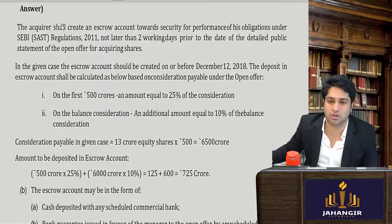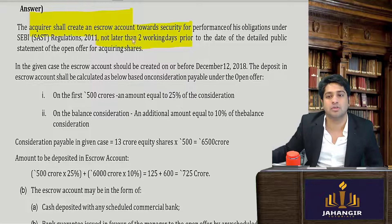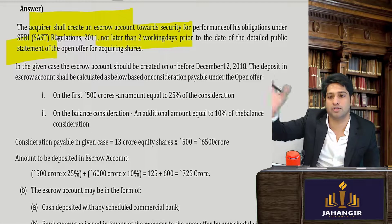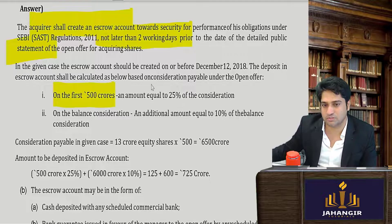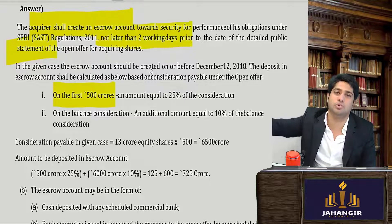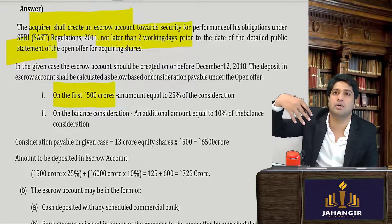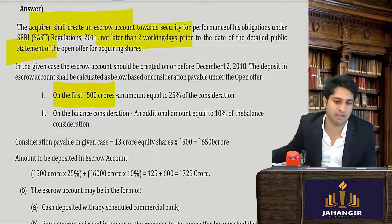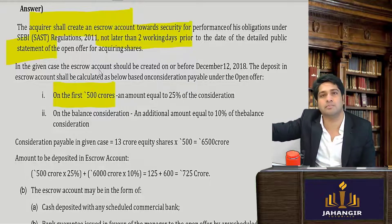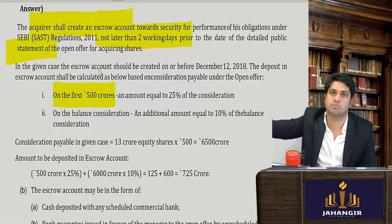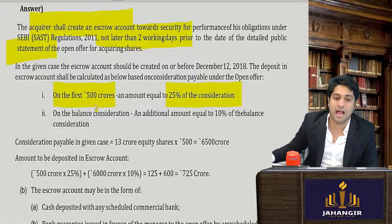Once you know the law, the sums are very simple. The acquirer must create an escrow account not later than two working days prior to the detailed public announcement. Before giving the detailed public announcement, the escrow account must be set up. Now, how much must be deposited? For the first 500 crores of consideration, 25% must be deposited. For the balance consideration beyond 500 crores, an additional 10% must be given.